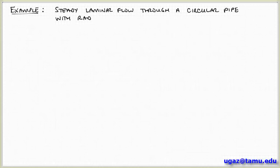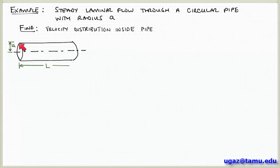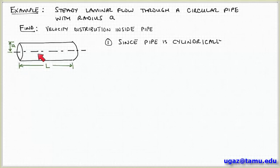Now that we've defined this solution procedure, let's apply it to solve a real problem — flow through a pipe, which is of particular interest to chemical engineers and engineers generally. The geometry consists of a cylindrical space — the pipe — with radius A and length L, with fluid flowing through it from left to right. We want to find the velocity distribution inside the pipe as a function of position.